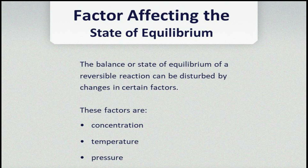Now there are some factors that affect the state of equilibrium, and that is what we are going to look at now. The balance or the state of equilibrium of a reversible reaction can be disturbed by a change in a certain factor. Whenever we reach a point of equilibrium and there is a change in any of these factors, there will be a change in the state of equilibrium. So let's look at these factors.